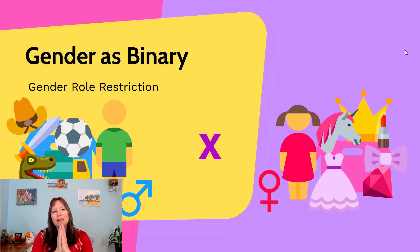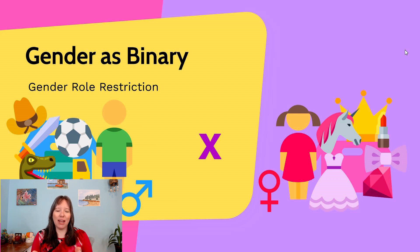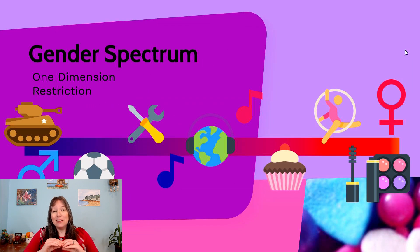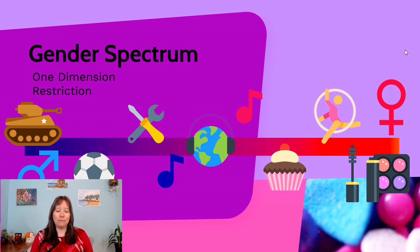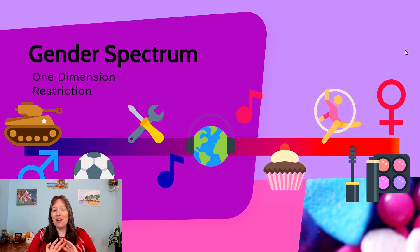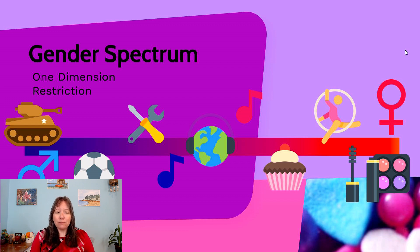Starting around the 1970s, we started to realize that yes, there are boys and girls, but in terms of one's psychology and interests, gender could be explained on a continuum. One of the possible continuums we viewed gender on was a one-dimensional spectrum. The icons used as examples are culturally specific and not innate in any possible way, but we can think about one possible dimension.